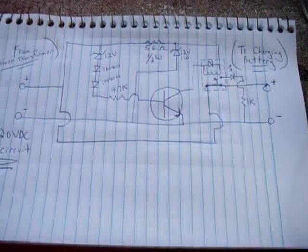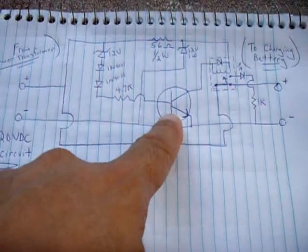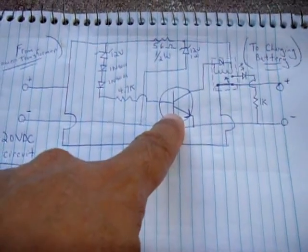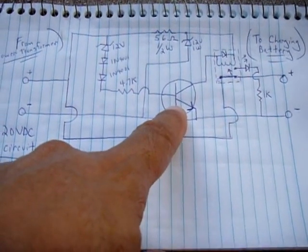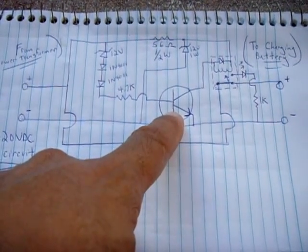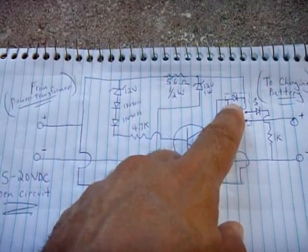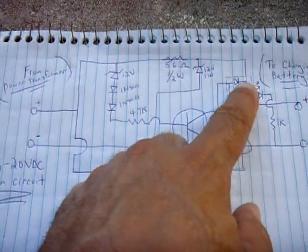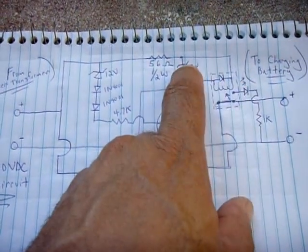This could be any NPN transistor. I use a 2N4400, just use one that could handle a couple hundred milliamps. 2N3904 would work, or BC547 would work. Now the circuit could climb to 18 or 20 volts if there's nothing connected to the battery.